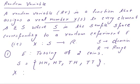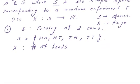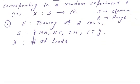Let capital X denote the random variable representing the number of heads for this random experiment of tossing two coins, where the sample space is {HH, HT, TH, TT}. Then X can take the values 0, 1, and 2.